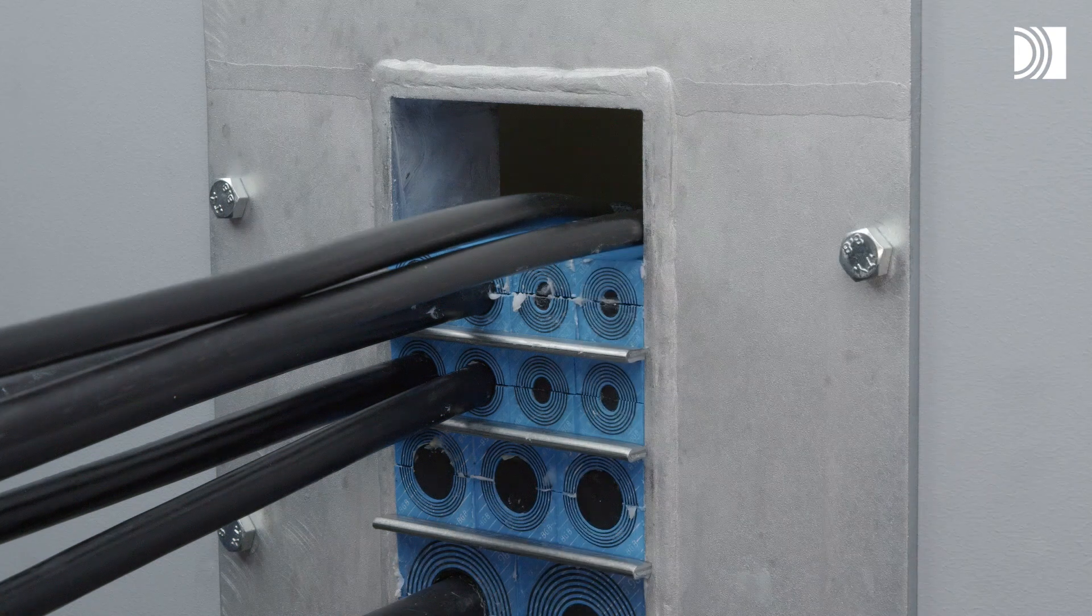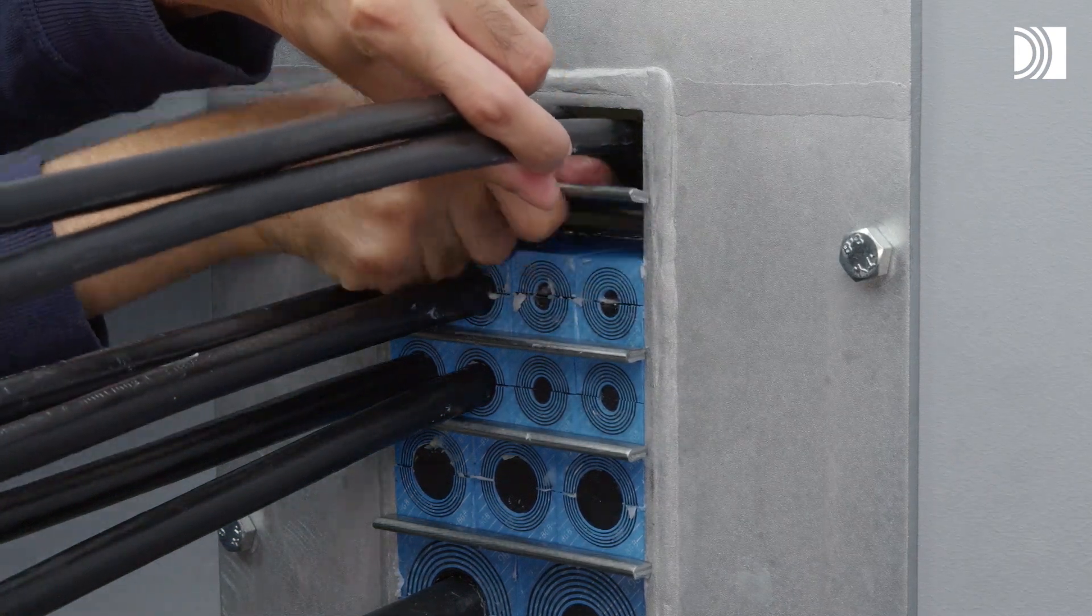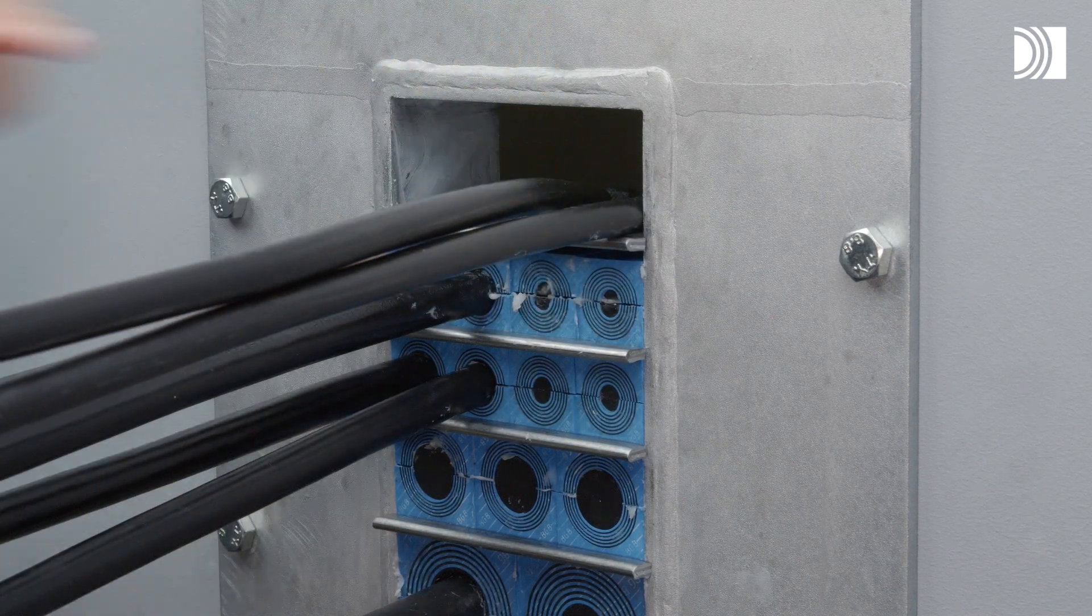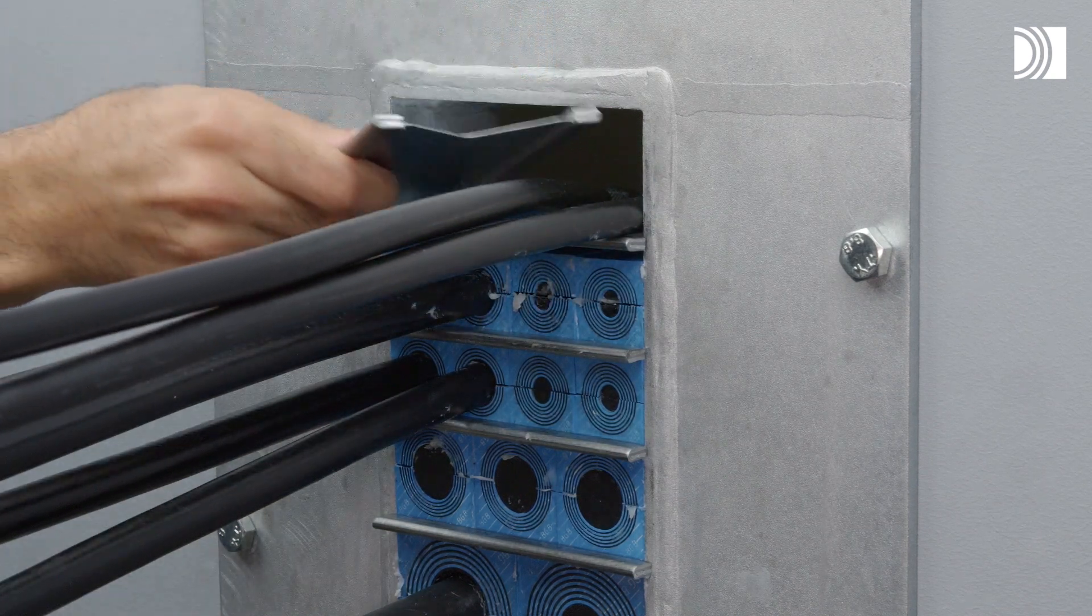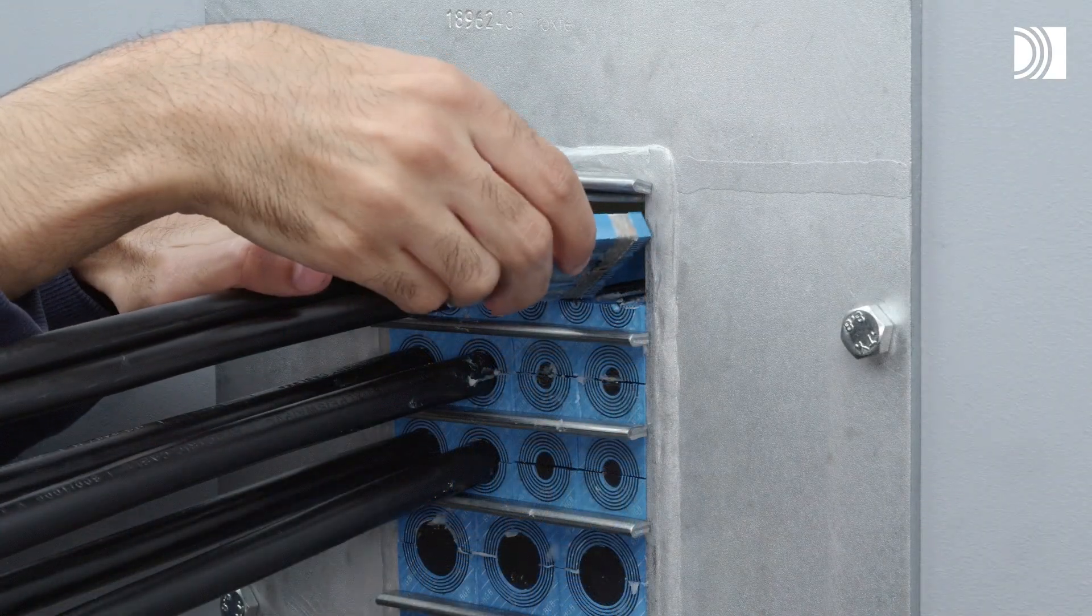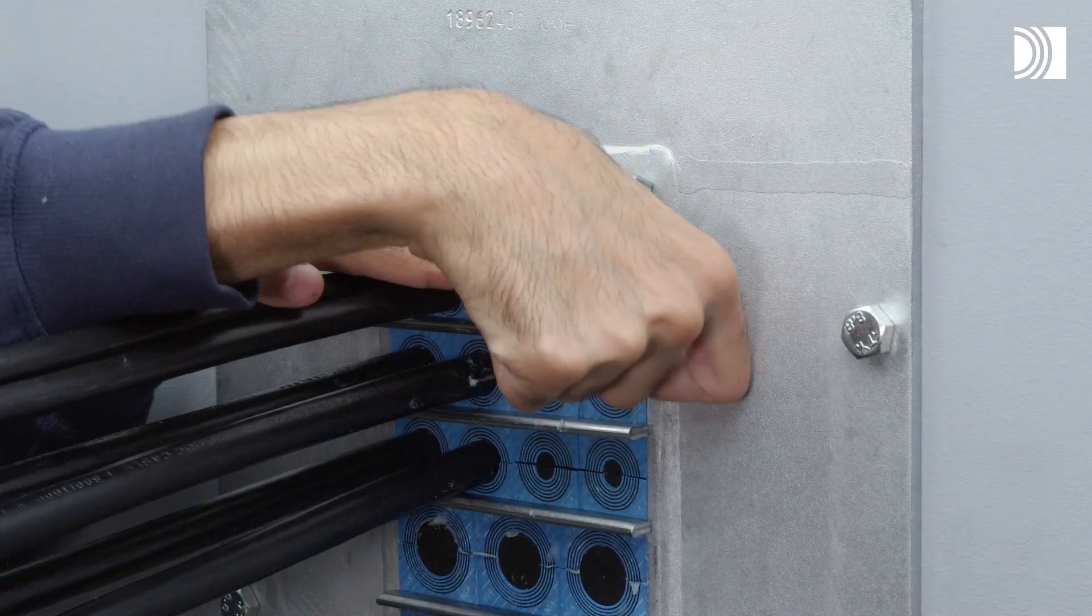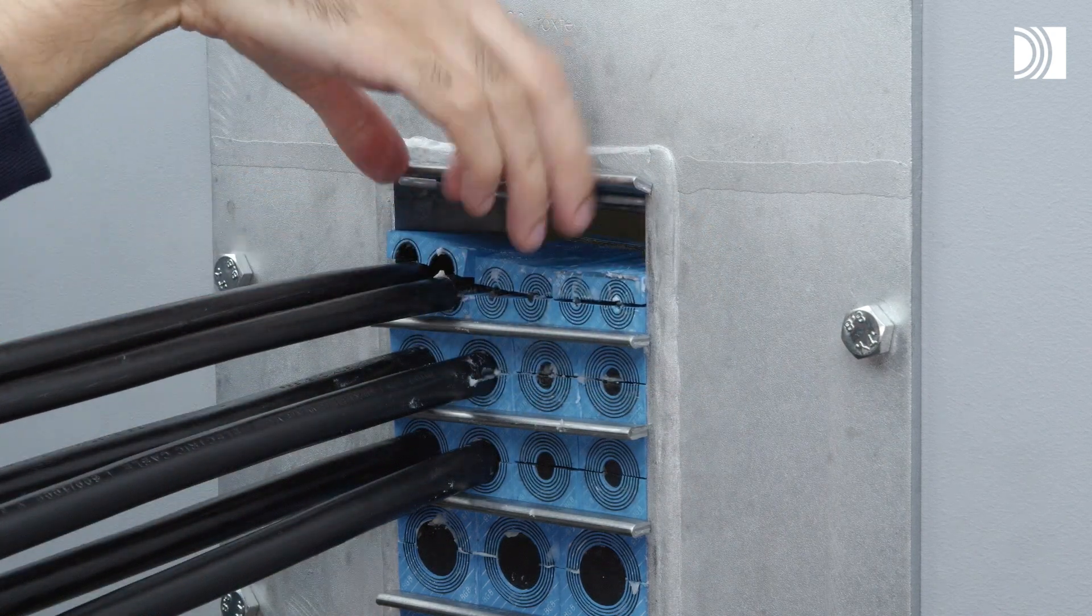Before inserting the final row of modules, insert two stay plates. Separate the two stay plates and insert the final row of modules between the stay plates. Place the upper stay plate on top of the modules.